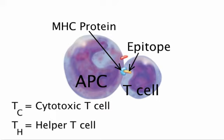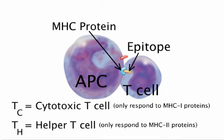T-cells respond to two classes of MHC proteins: MHC1 proteins, which occur on every nucleated cell of the body, and MHC2 proteins, which occur only on antigen-presenting cells and display only foreign antigens.